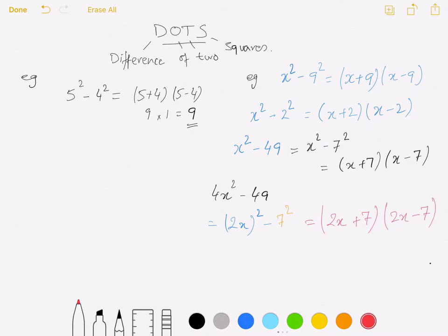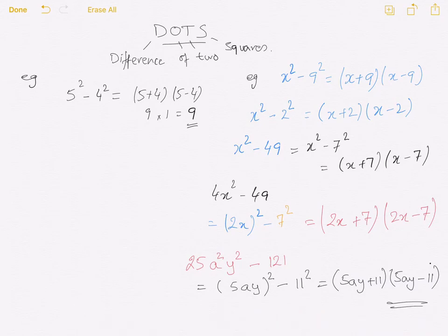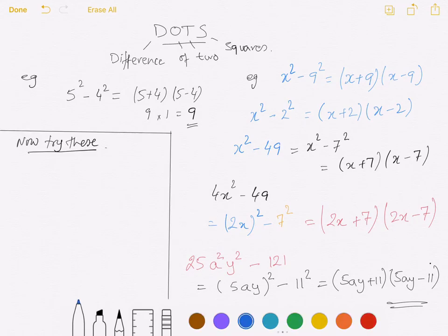You have to make sure you always have two squares. Another example: 25 a squared y squared take away 121. Now you should understand that this question can be written as 5ay whole squared minus 11 squared, and my answer now will be 5ay plus 11 and 5ay take away 11. This is DOTS, difference of two squares.